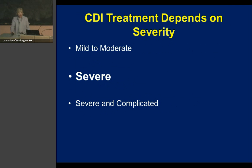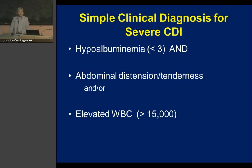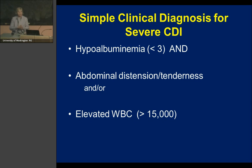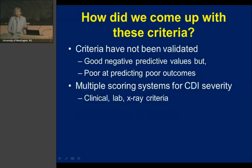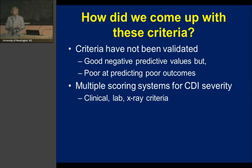Severe C. diff infection is defined by hypoalbuminemia due to this illness — not from cirrhosis or another cause — plus abdominal distension or tenderness, and/or an elevated white blood cell count greater than 15,000. These criteria have not been formally validated; most have a good negative predictive value, meaning if absent the patient is unlikely to be very sick, but positive predictive value is much harder to establish.